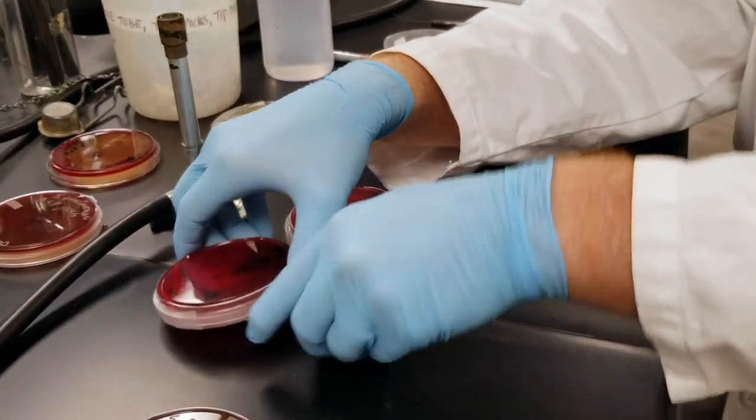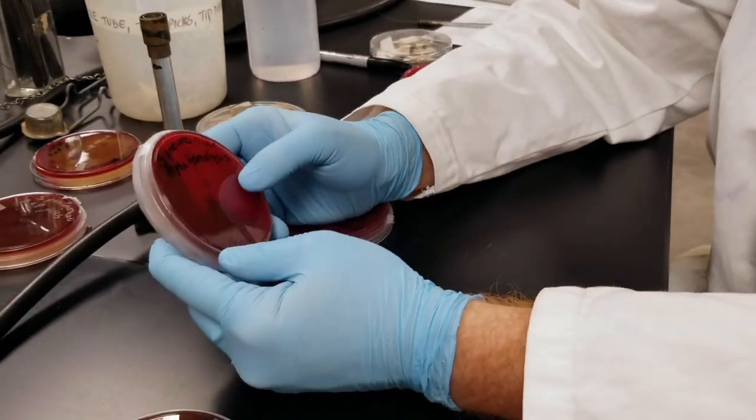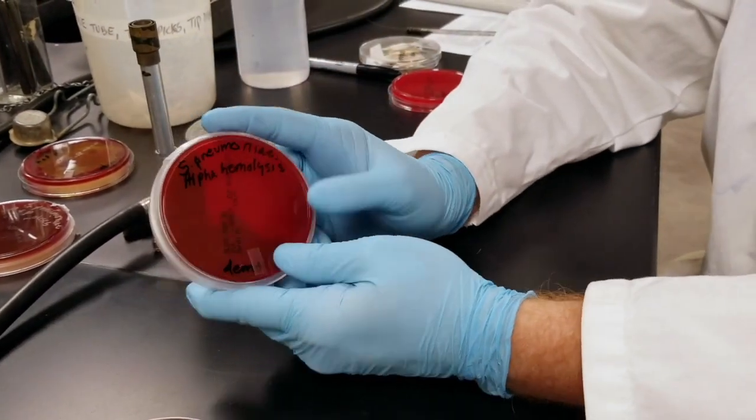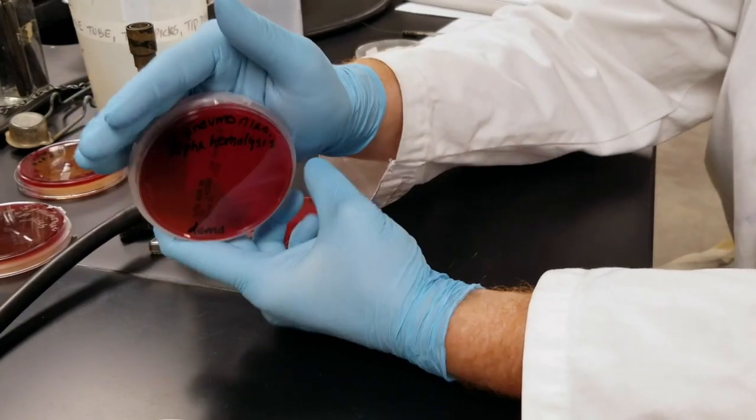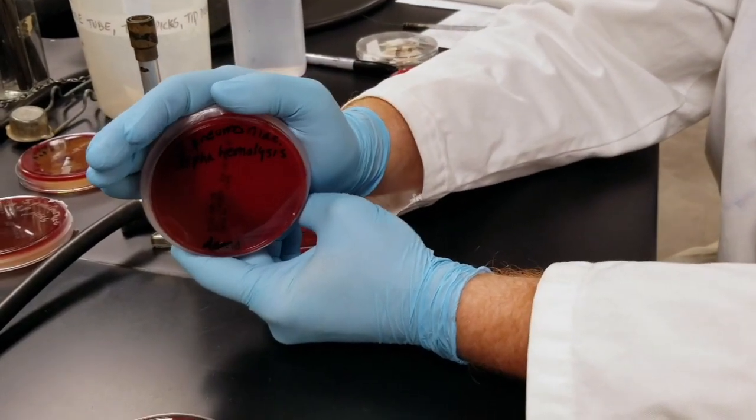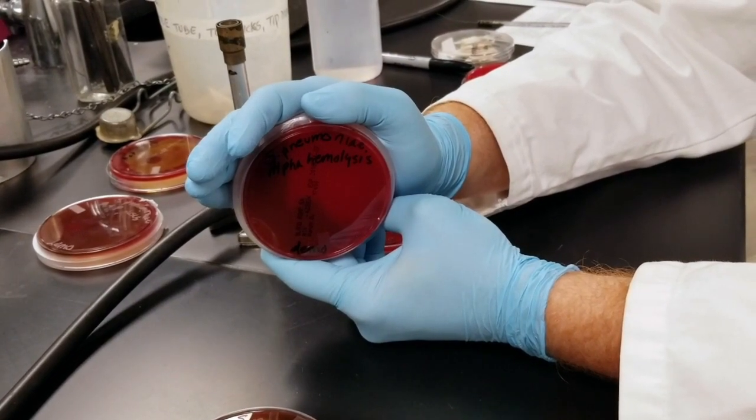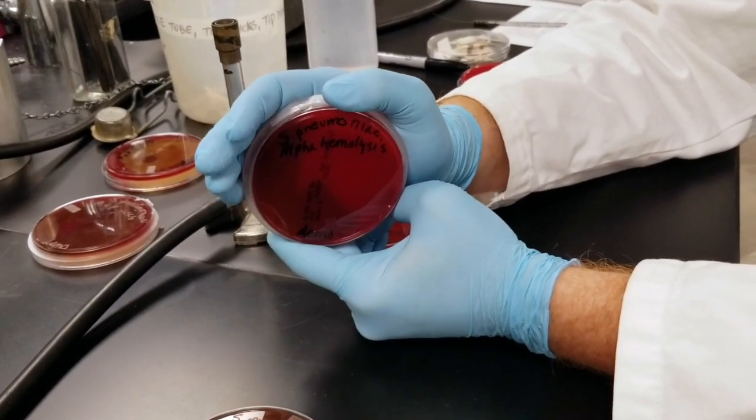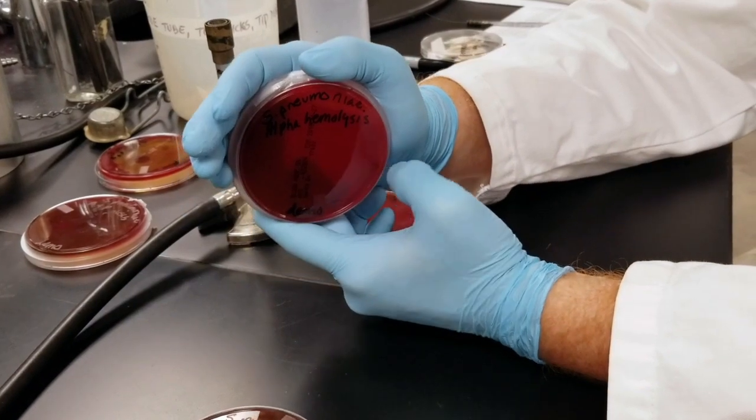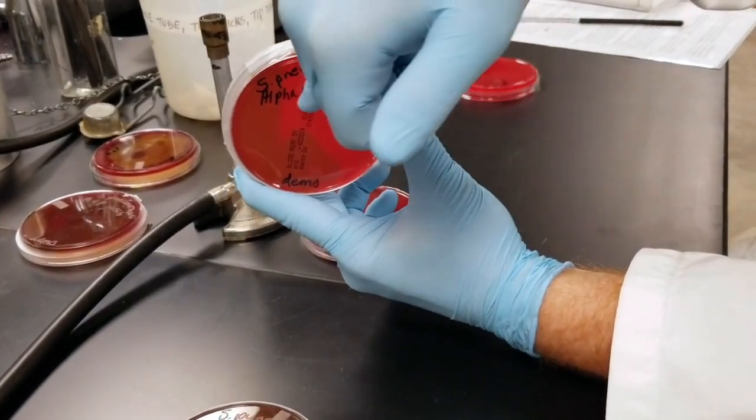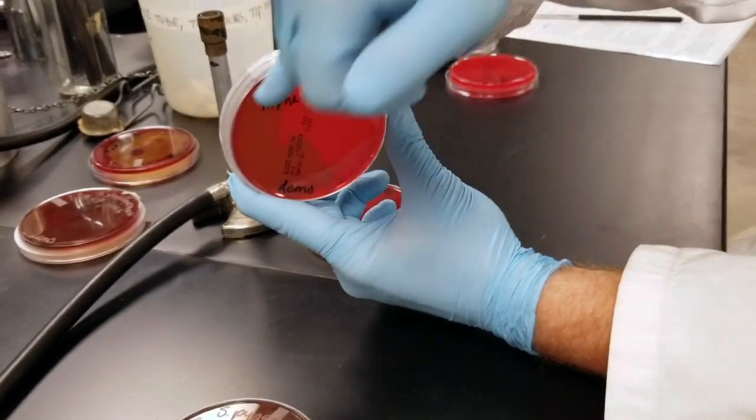Next, we have alpha hemolysis. So this will have normally some growth. However, it doesn't have the same efficiency of red blood cell lysing as we do with beta hemolysis or microbes that cause beta hemolysis. So you'll see here that we have our unaffected blood agar up here, and then down here it's slightly discolored.